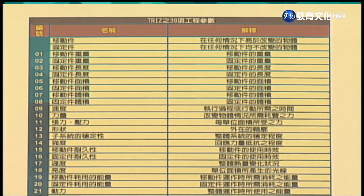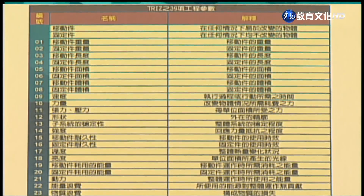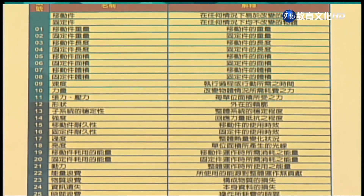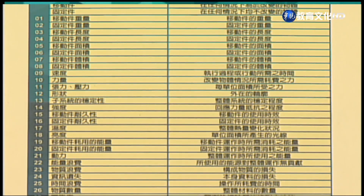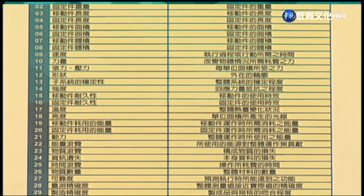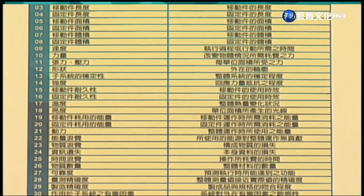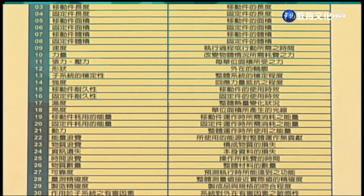39个工程参数如下：移动件（在任何情况下异于改变的物体）、固定件（在任何情况下均不改变的物体）、移动件重量、固定件重量、移动件长度、固定件长度、移动件面积、固定件面积、移动件体积、固定件体积、速度（执行过程或行动所需之时间）、力量（改变物体情况所需耗费之力）、张力压力（每单位面积所受之力）、形状（外在的轮廓）、子系统的稳定性（整体系统的稳定程度）、强度（回应力量抵抗之程度）、移动件耐久性、固定件耐久性。